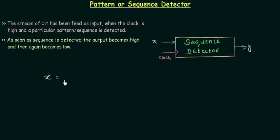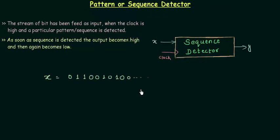Let's say X is the input bit stream: 0, 1, 1, 0, 0, 1, 0, 1, 0, 0 and so on. In this input bit stream I want to detect a particular pattern or sequence. The Sequence Detector is shown in green with this brown box. The input is X, the clock is present because it is a sequential circuit — it controls when the circuit operates. Y is the output, and as soon as the sequence is detected the output becomes high, then goes low again.